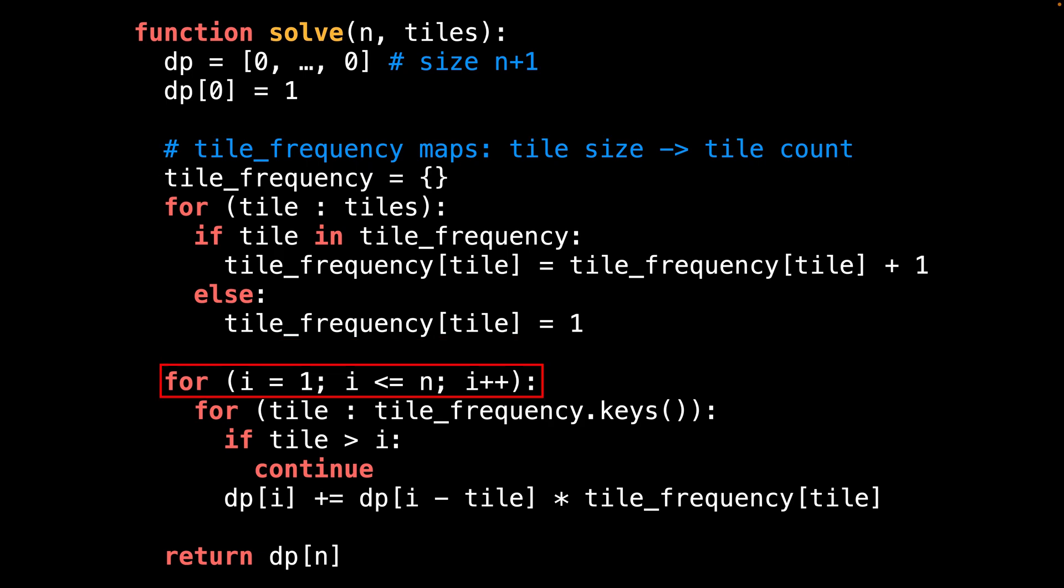In this loop, the variable i represents the board length. So we iterate from i = 1, meaning a board of size one up to a board of size n. Then inside the loop, we loop through all the unique tile lengths. Then we skip the tiles which are larger than the current board size, since they can't fit on the board. And sum up the number of ways to tile the board by adding up all the values in the linear recurrence. To do this, we need to add up the number of ways to tile the board at the current length minus the tile size, and multiply by the frequency of the tile length. After the loops have completed the dp array should be populated and we can return the value of f(n).